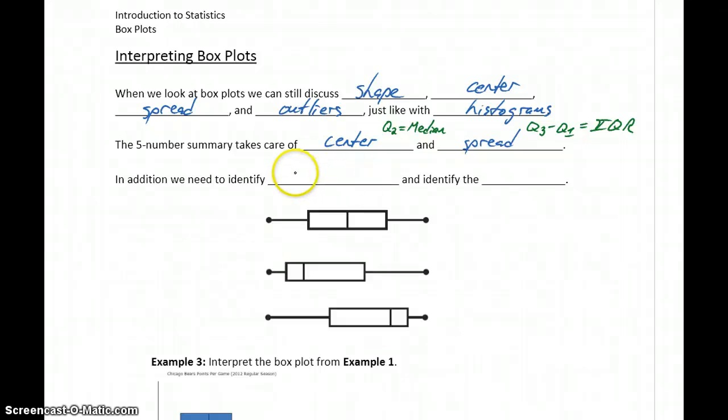What we need then to discuss in addition are the existence of any outliers, or to state that there are none, and identify the shape of our distribution.